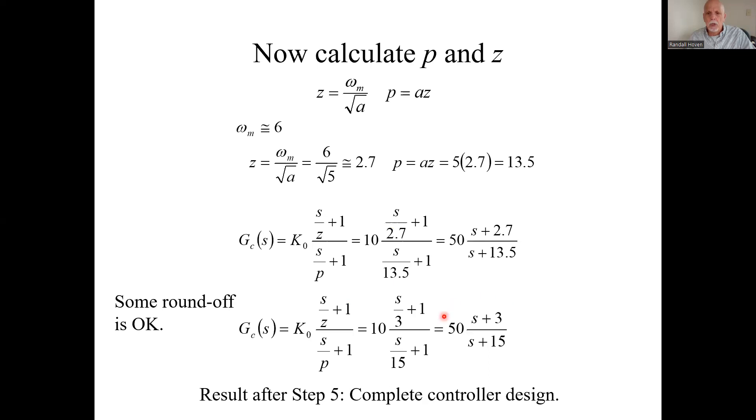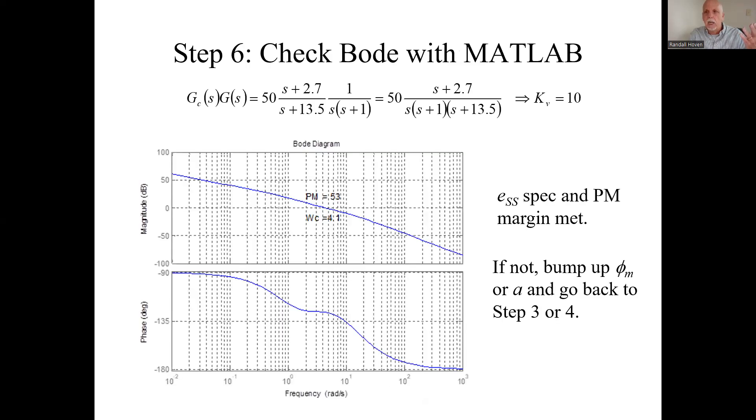We're done with the first lead controller at this point. Step six, you're checking it out with MATLAB. So here's the new forward path gain. It's this product, the controller and the original plant. Here's the original plant, here's the controller, here's the whole new forward path transfer function.